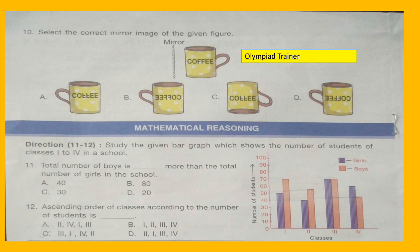Now comes the Mathematical Reasoning part. For Questions 11 and 12, a bar graph is given. Study the given bar graph which shows the number of students of Classes 1 to 4 in a school. Question 11: Total number of boys is dash more than the total number of girls in the school. Question 12: Ascending order of classes according to the number of students is dash.